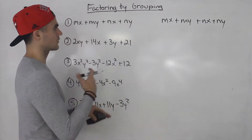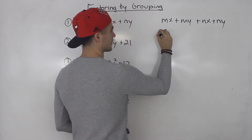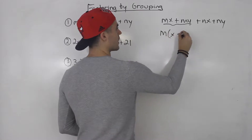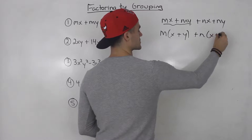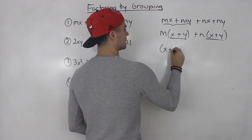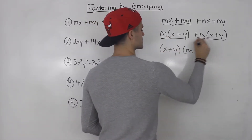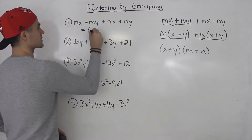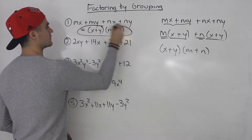Sometimes you're going to have to rearrange these expressions. In this case, you don't have to, because if we factor out an m from the first two, we're left with x plus y. Then if we factor out an n from the next two, we're left with x plus y again. And then we could take out an x plus y, so we're left with m plus n. So the answer to number one is x plus y times m plus n.